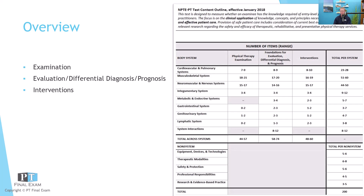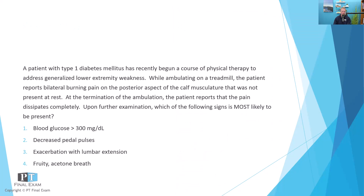I'll read you the question, give you a moment to respond, and then we'll talk together. A patient with type 1 diabetes mellitus has recently begun a course of physical therapy to address generalized lower extremity weakness. While ambulating on a treadmill, the patient reports bilateral burning pain on the posterior aspect of the calf musculature that was not present at rest. At the termination of the ambulation, the patient reports the pain dissipates completely.